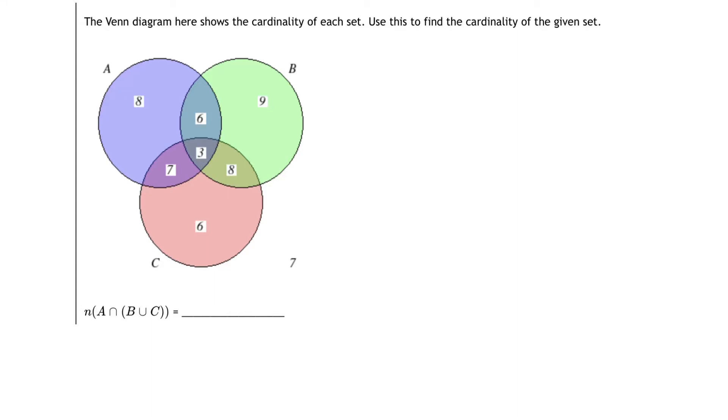The Venn diagram below shows the cardinality of each set A, B, and C. Use this diagram to find the cardinality of the set A intersect B union C.